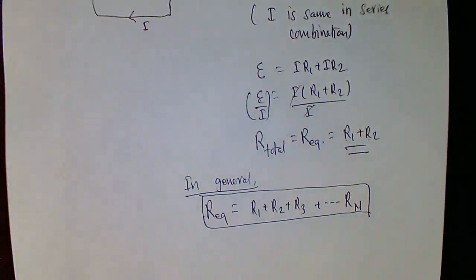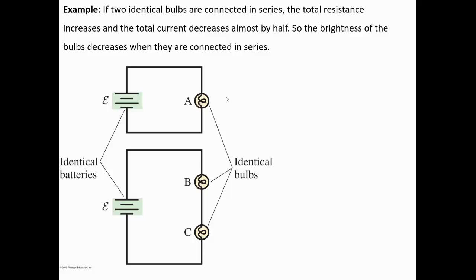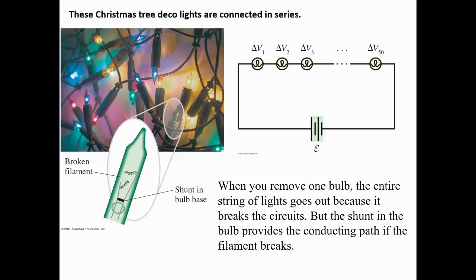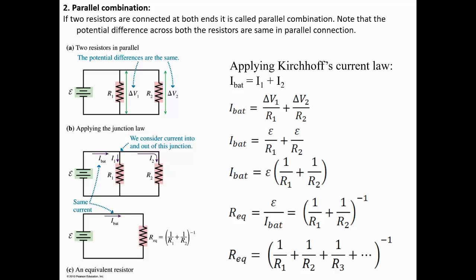An example of a series combination is two electrical bulbs in series, both acting as resistors. Another practical example is Christmas tree decorative lights connected in series. One problem with series wiring is that if one bulb is removed, the entire string goes out. To fix this, a shunt is provided in each bulb to give a conducting path even if the filament breaks.